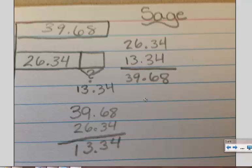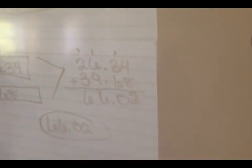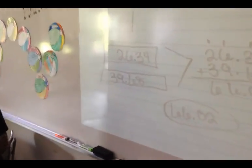Now we're going to listen to a couple of Mrs. Morgan's fifth graders explain how they drew theirs. So our problem was adding two decimals, 26.34 and 39.68, and we used an addition model. Can you explain what you did?